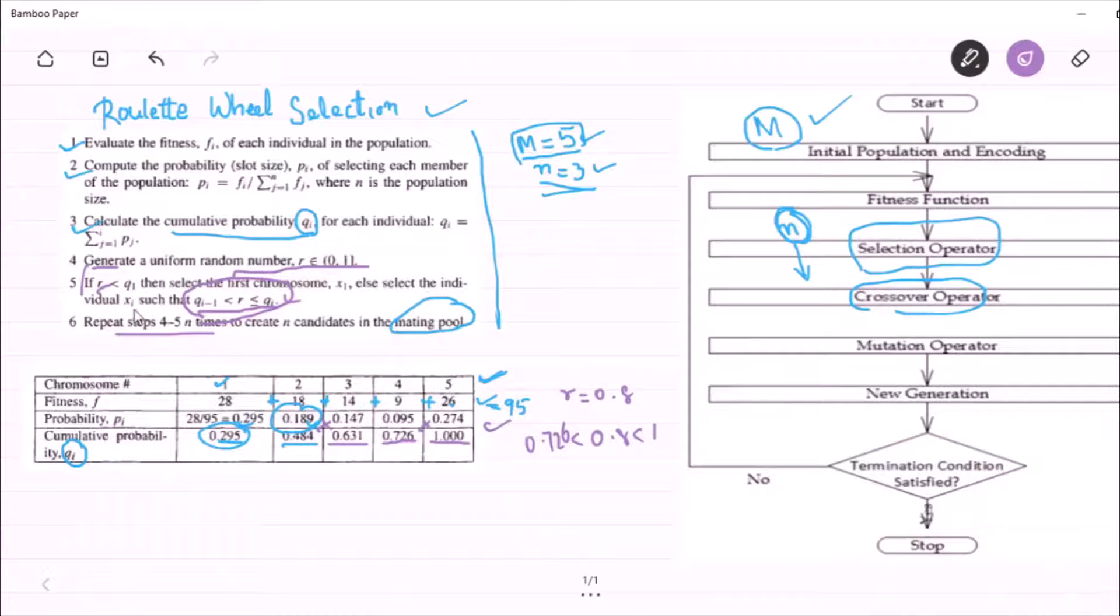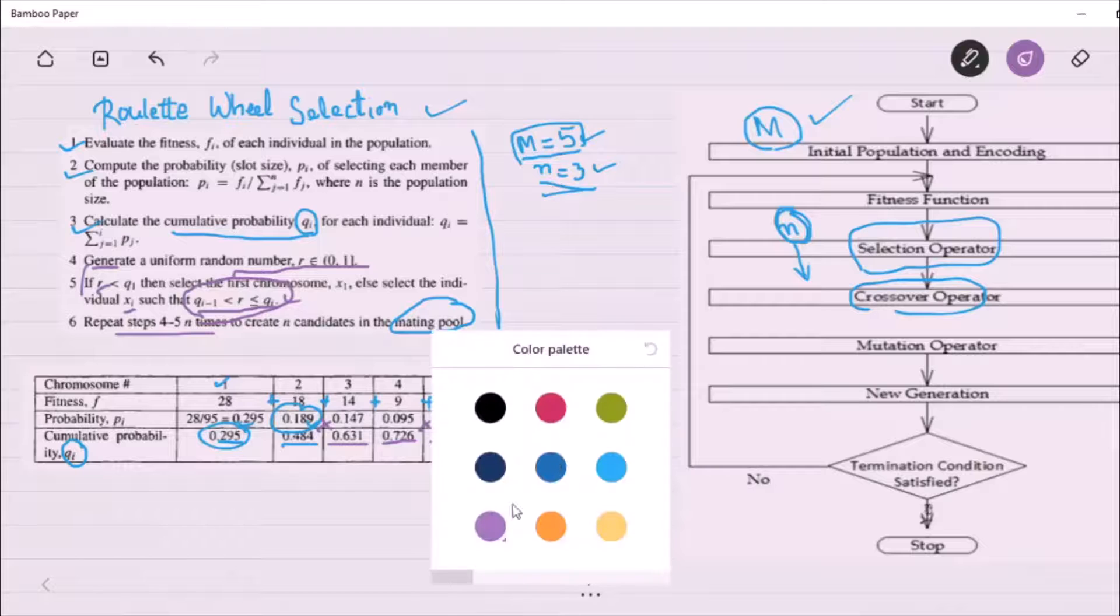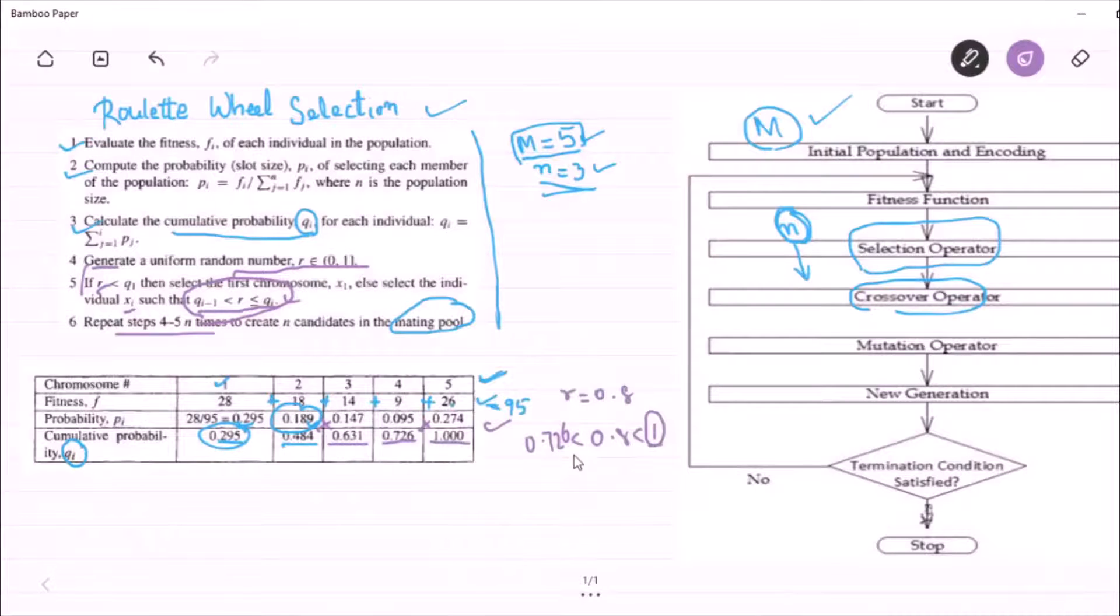If this condition is satisfied, we have to select the individual xi. Just because this is the cumulative probability of individual 4 and this is cumulative probability of individual 5. So individual 5 is selected into the mating pool.